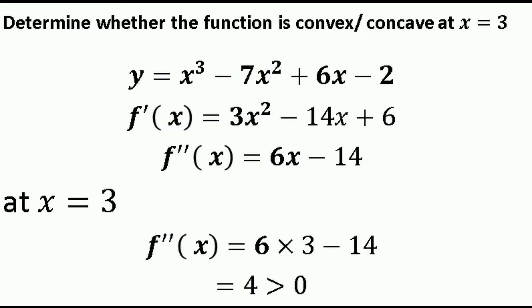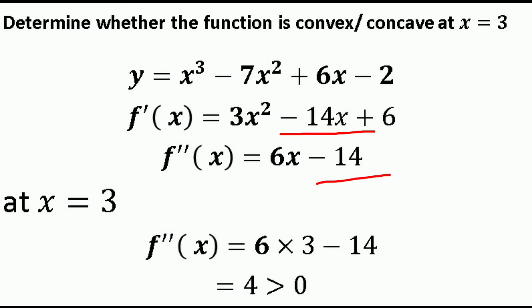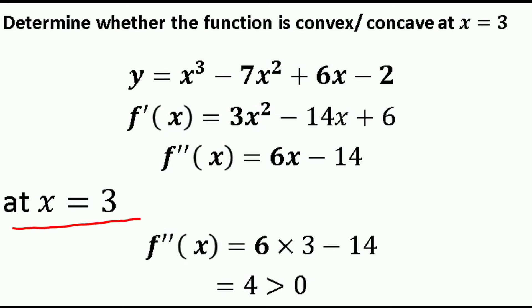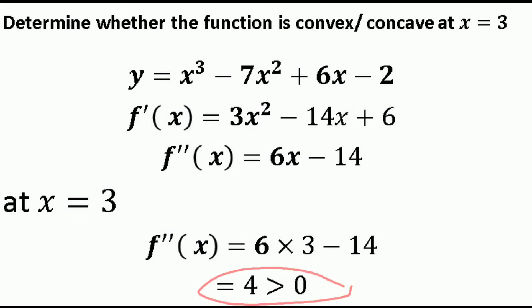Now we take the second derivative of the first derivative. f''(x) = 6x - 14. Substituting x = 3: f''(3) = 6(3) - 14 = 18 - 14 = 4. Since 4 > 0, the function is said to be a convex function at x = 3.